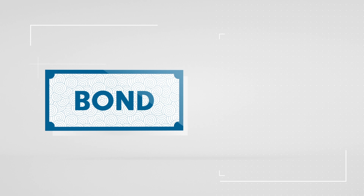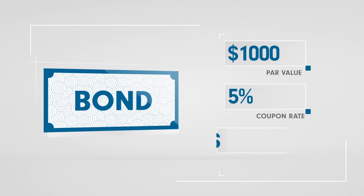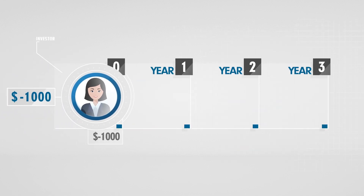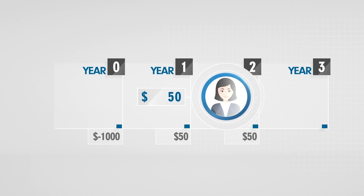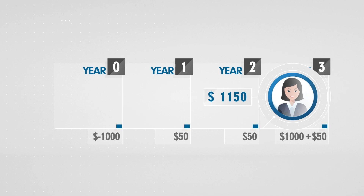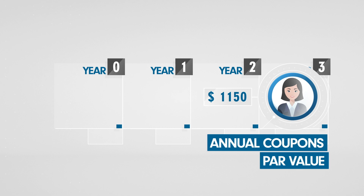Let's look at a bond with a $1,000 par value, a 5% coupon rate and 3 years to maturity. The investor will receive a $50 coupon in year 1 and another $50 coupon in year 2. When the bond matures in year 3, the investor will receive another $50 coupon plus $1,000 capital, which was the original cost of the bond. This $1,150 payment is agreed when the bond is issued, with the investor receiving annual coupons and par value when the bond matures.